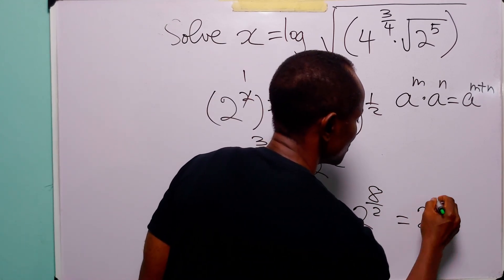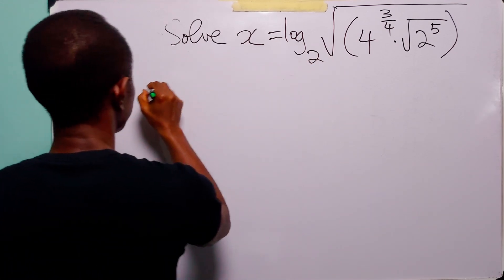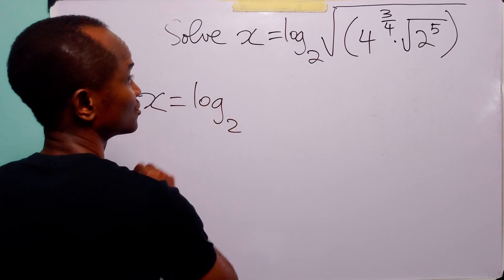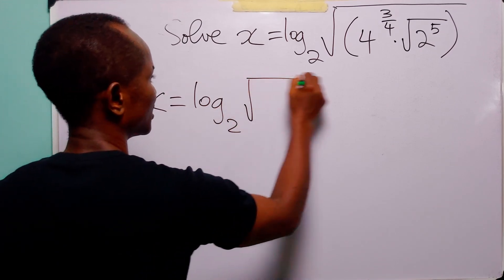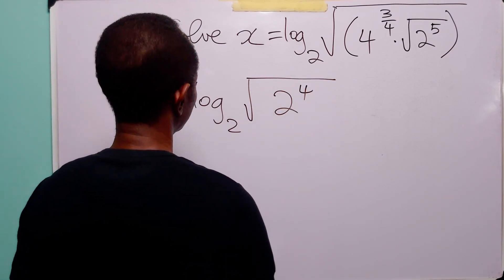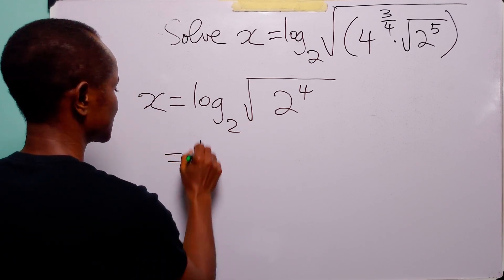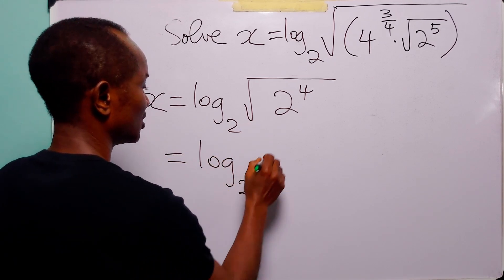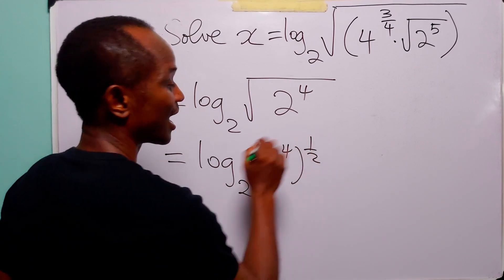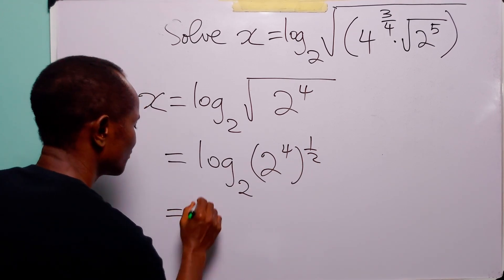8 divided by 2 is equal to 4, so this is 2 to the power 4. So now we have that x is equal to log to base 2 of the square root of 2 to the power 4. Of course, this square root can be written as 2 to the power 4 to the power half. Once more we multiply these two powers.